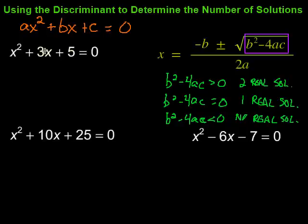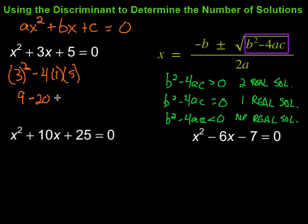Alright, so in this case we've got b squared. So my b here is 3, so it's going to be 3 squared minus 4 times a, in this case is 1. So 4 times 1 times c, which is 5. Okay, so let's figure out what that is. 3 squared is 9. Then we've got minus 4 times 1 is minus 4, times 5 is 20.